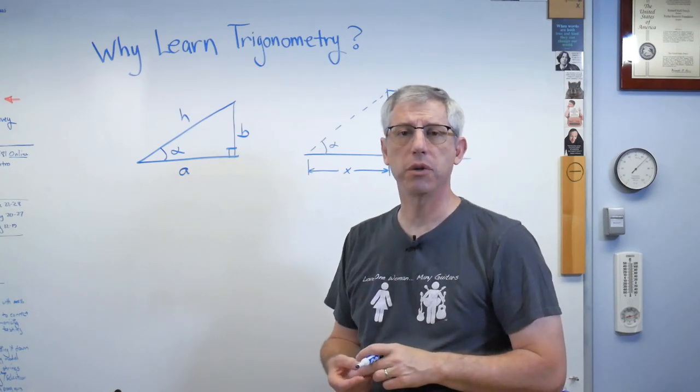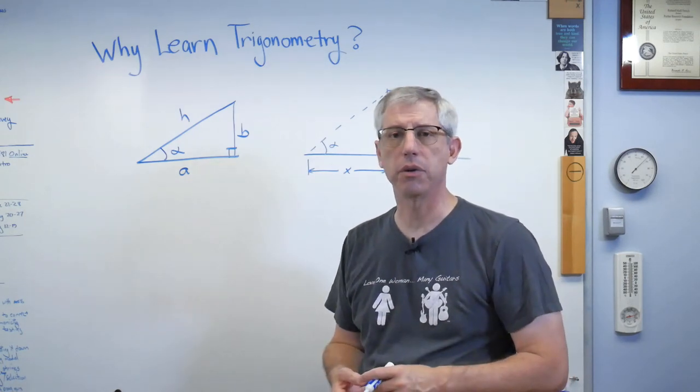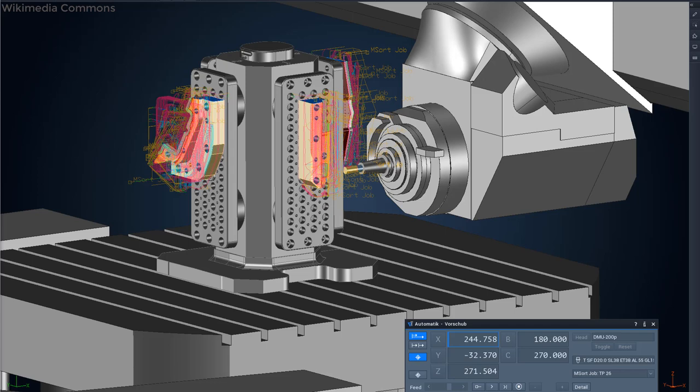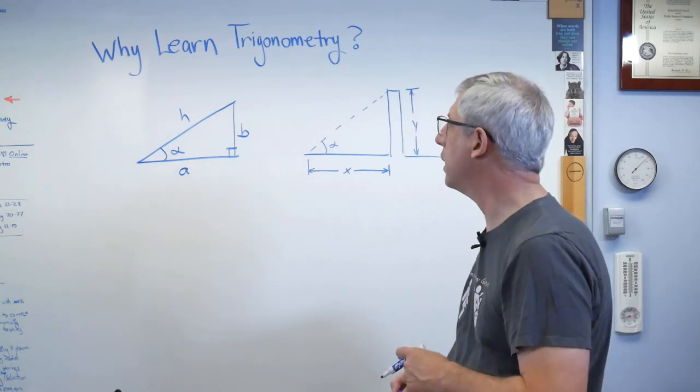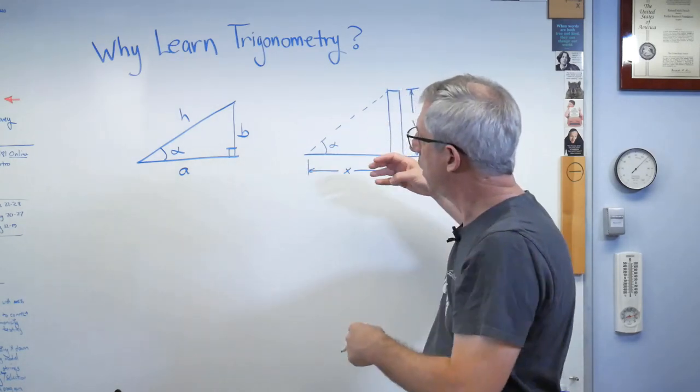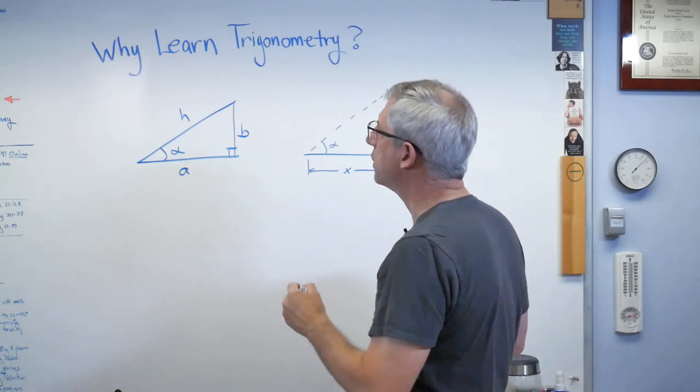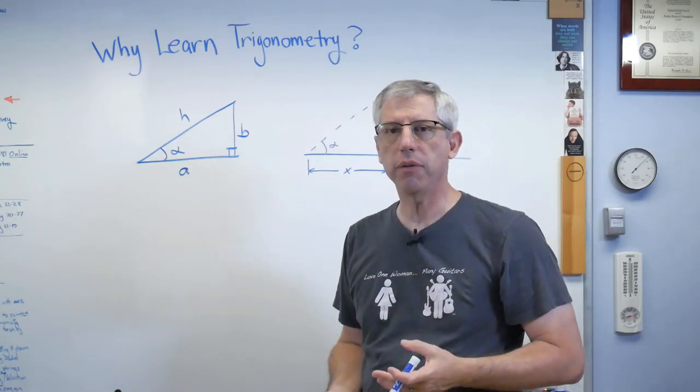Anybody who's ever designed a machine part has used trigonometry. Trigonometry is built into all the computer-aided engineering programs out there. So, trigonometry is built into everyday design, everyday layout of parts of systems and things. It's absolutely everywhere. So, what we do to kind of formalize all this is we basically have three functions.